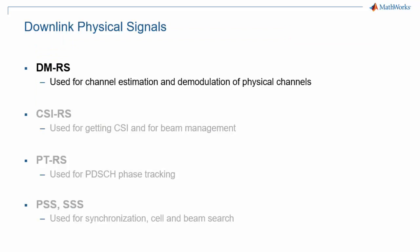DMRS are not the only physical signals defined for 5G NR. This slide shows a list of physical signals for downlink, and some of them are addressed in other episodes of this 5G Explained video series. DMRS are used for channel estimation and demodulation of associated physical channels. They can also be used to estimate received signal power, as is already the case in LTE.